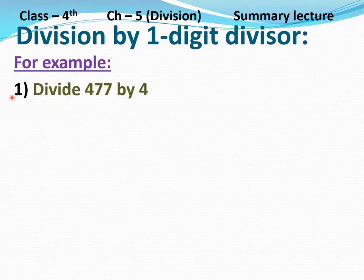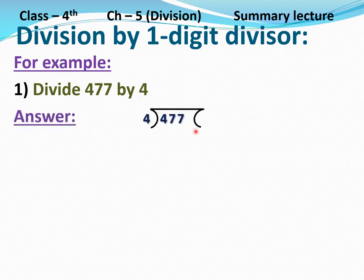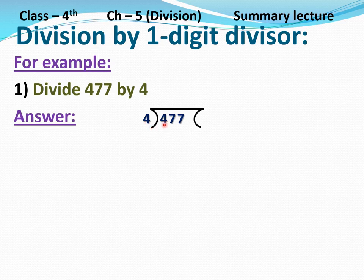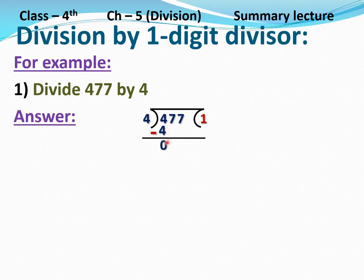Number 4: Division by one-digit divisor. For example, question number 1: Divide 477 by 4. Make lines, write 477 as dividend and 4 as divisor on the left side. Multiply 4 by that number so that it is equal to 4 or less than 4. 4 multiplied by 1 equals 4. Now do subtraction: 4 minus 4 is 0. Then take the next number, that is 7.